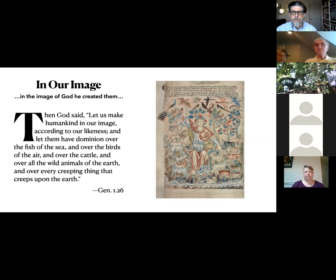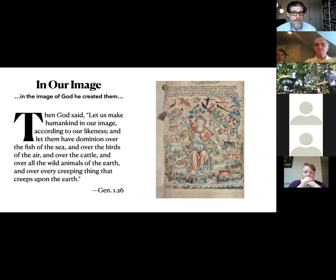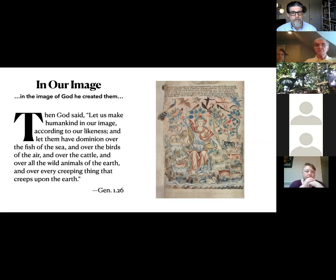The idea is that when the emissary comes from the king — and in fact the Hebrew term there is messenger, malach, which is what we get 'angel' from — they are as good as God being there. That's why in the Abraham narrative, when it says 'the Lord spoke to Abraham,' it will alternate between 'the Lord spoke to Abraham' and 'the angel said,' because it's one and the same.